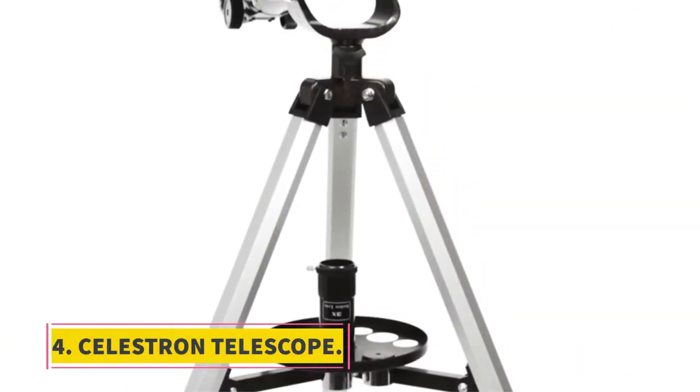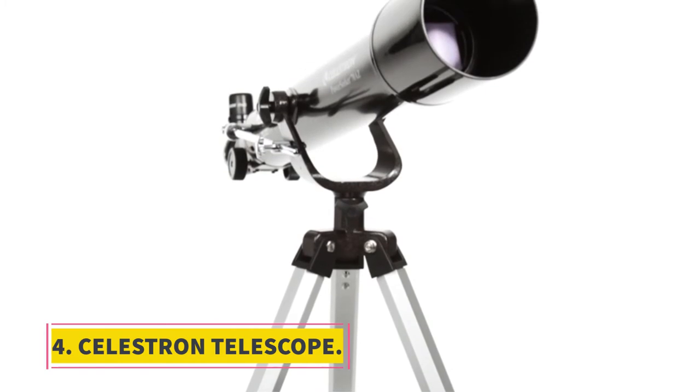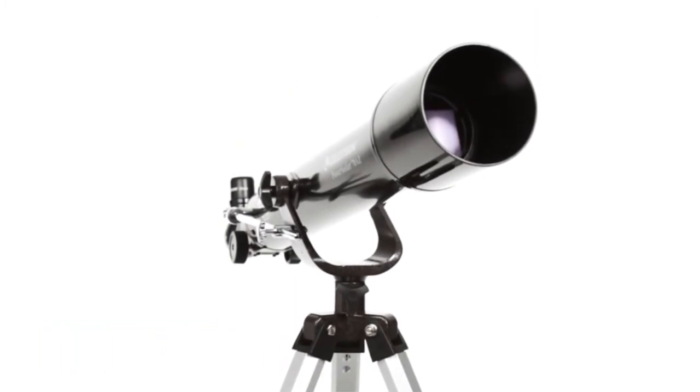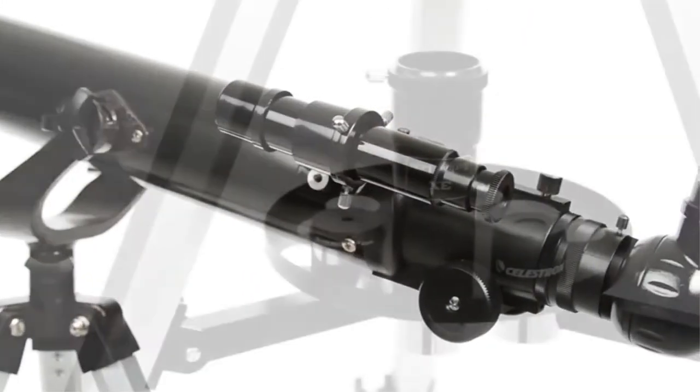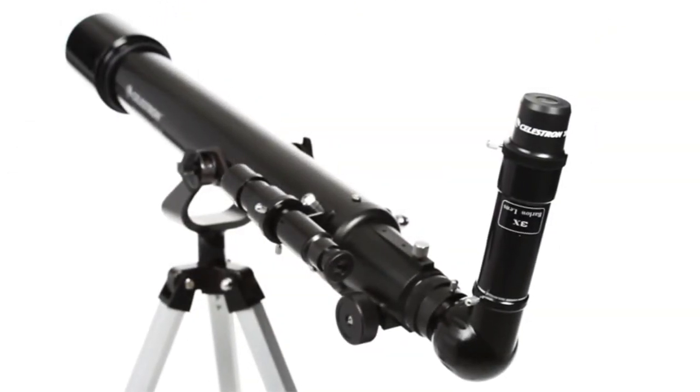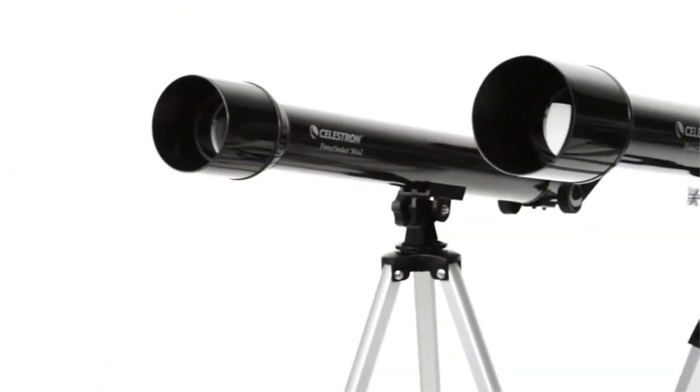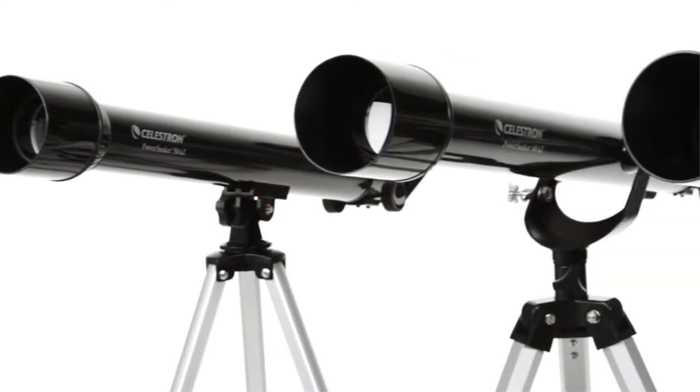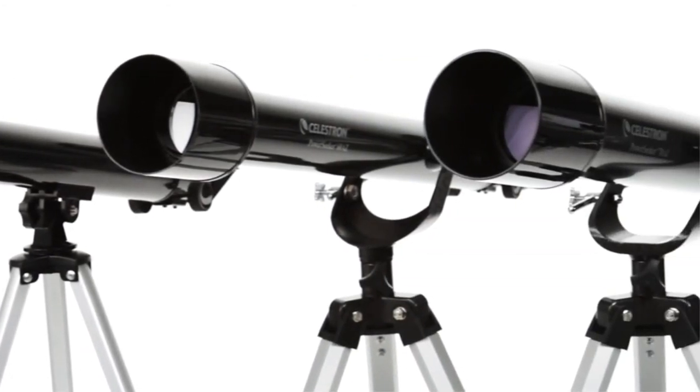At number 4, Celestron Telescope. The PowerSeeker 70EQ telescope from Celestron is a great option. The telescope features an Altazimuth mount that is light and easy to use. Overall, the PowerSeeker 70EQ telescope is an excellent small telescope for an extremely affordable price.